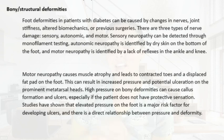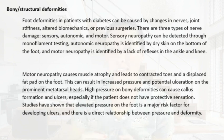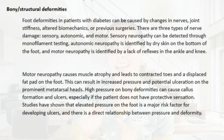We're also going to look for bone or structural deformities of the feet. Foot deformities in patients with diabetes can be caused by changes in the nerves, joint stiffness, altered biomechanics, and previous surgeries. There are three types of nerve damage: sensory, autonomic, and motor. Sensory neuropathy can be detected through monofilament tests. Autonomic neuropathy is identified by dry skin on the bottom of the foot, and motor neuropathy by lack of reflexes in the ankle and knee.